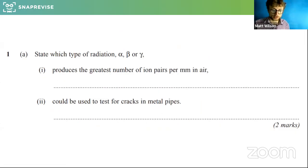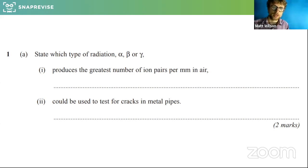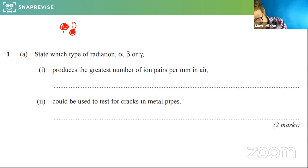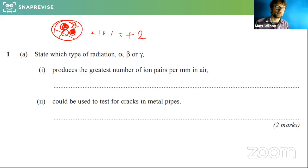What is an alpha particle made of? An alpha particle is made of two protons and two neutrons. The neutrons have no charge; the protons each have plus one, so altogether this particle has a charge of plus two.